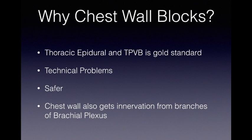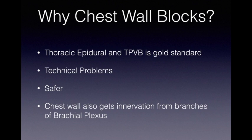In comparison, chest wall blocks like PECS1, PECS2, and serratus plane blocks are very superficial and easy blocks. They are safe because they are away from neuraxis, whereas with thoracic paravertebral block you are very close to the neuraxis with chances of epidural injection, subarachnoid injection, pneumothorax, and many other complications. PECS blocks are very safe. The chest wall also gets innervation from branches of the brachial plexus, which is not covered by thoracic paravertebral blocks but can be easily covered by PECS1 block. That's why in recent years many studies have been published on PECS1, PECS2, and serratus plane blocks.